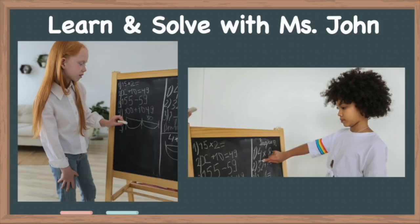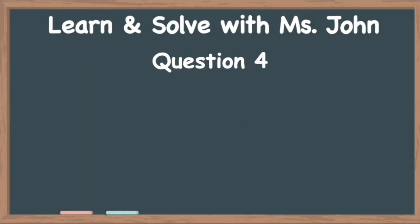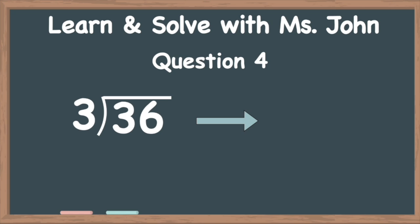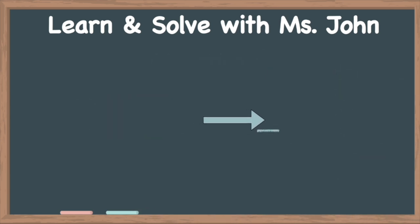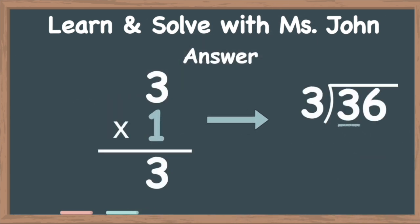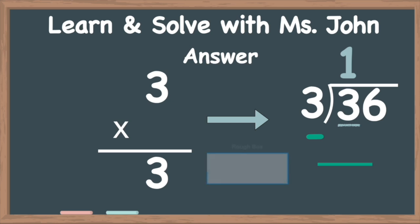We'll complete the next question using the long division method by showing our work. It isn't always about knowing the answer — how you get to the answer is what matters the most. Question number four: we're going to divide 36 divided by 3. We're going to first divide 3 divided by 3, then 6 divided by 3. So 3 times what gives us 3? The answer is 1. Now we put that 1 on top of the 3. In the rough box, we write 3 times 1 equals 3. We move that 3 underneath in the division section. 3 minus 3 gives us 0.